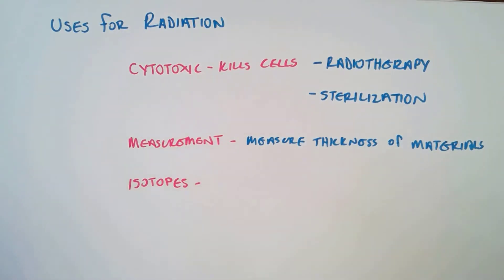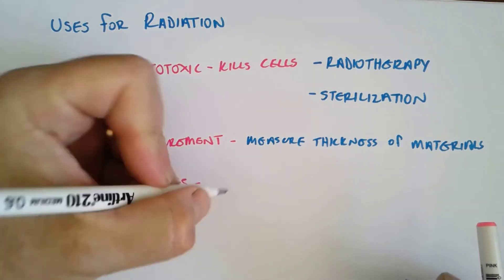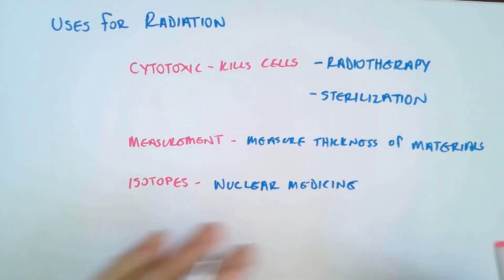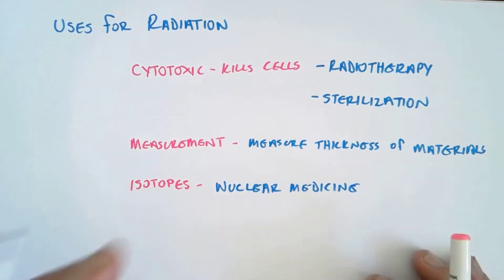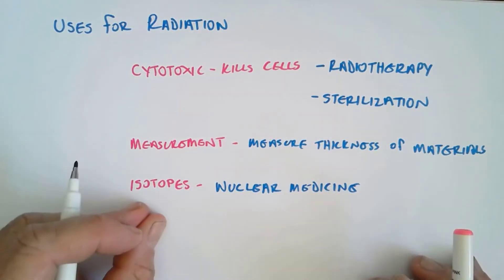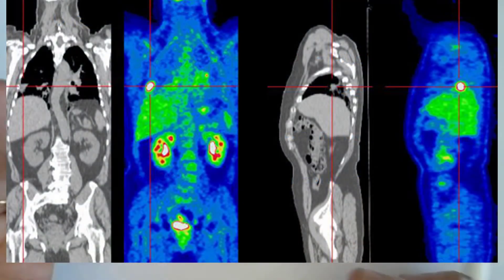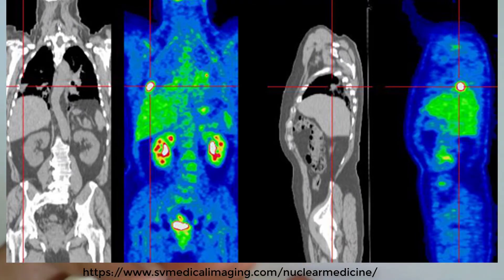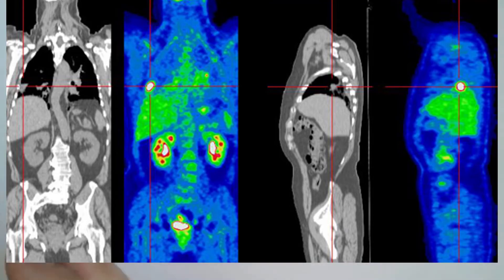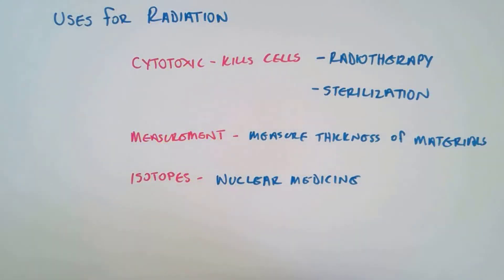The other way they use radioisotopes is in medicine — nuclear medicine, it's called. Nuclear medicine involves using isotopes to be able to follow fluids and material through the body. So they're able to identify blockages through the gastrointestinal tract, for example, using isotopes.